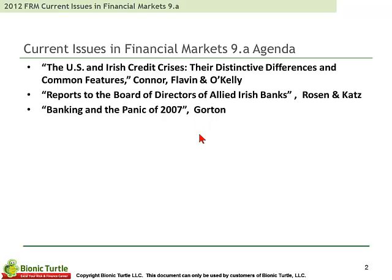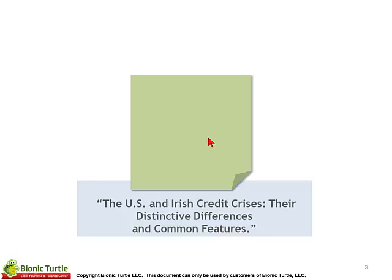In sequence, we start with three of the readings. These are all qualitative — we don't really have computations. First is the U.S. and Irish credit crises, a paper which reappears from the prior year in the FRM. Second, a report to the Board of Directors of Allied Irish Bank. And third, banking and the Panic of 2007, which reappears from at least the last two years in the FRM. Gary Gordon is fairly significant in current issues, and his ideas and perspectives on the financial crisis are fairly representative. So the Gary Gordon paper is significant for us.